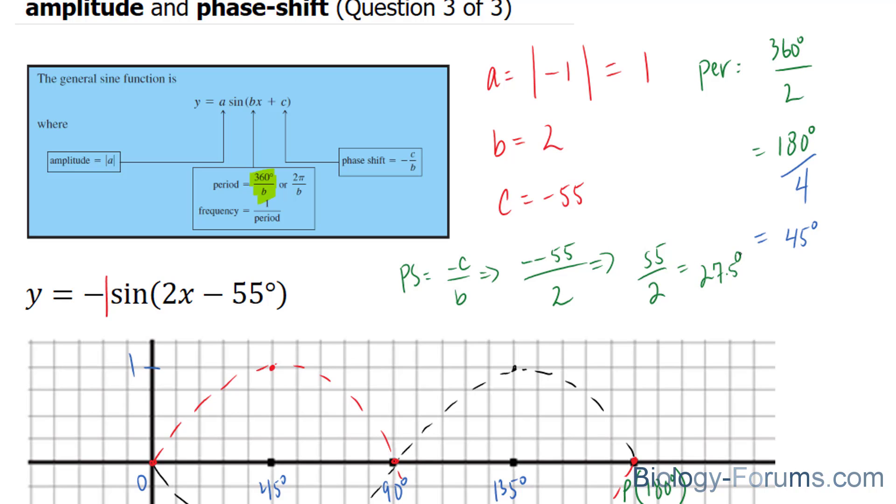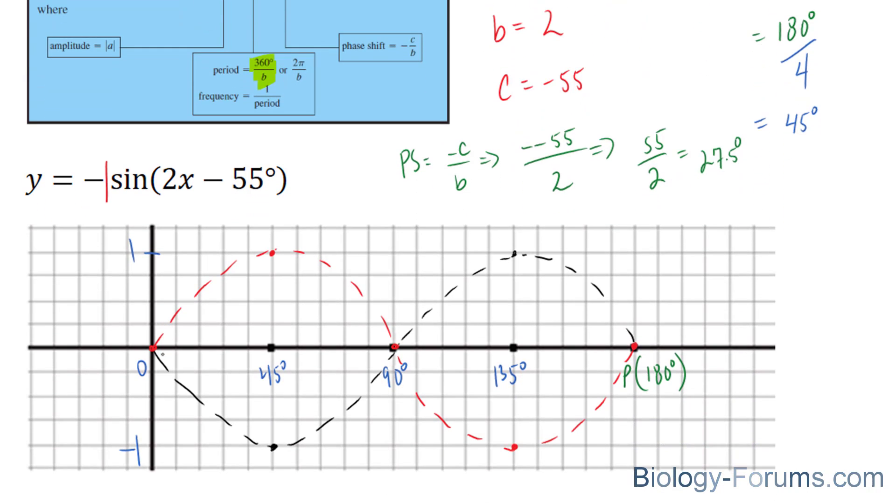That means every one of those major points will be shifted 27.5 degrees to the right. This point right here moves 27 degrees to the right.